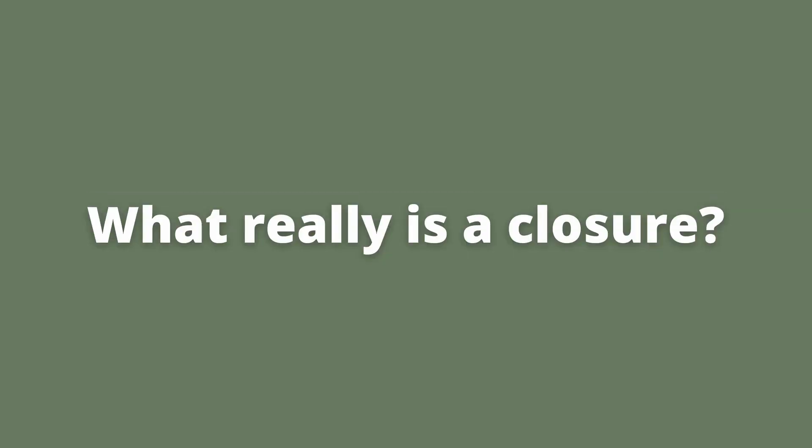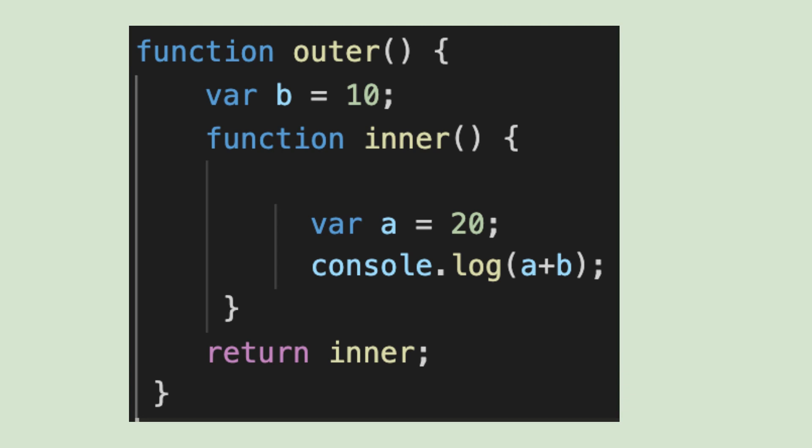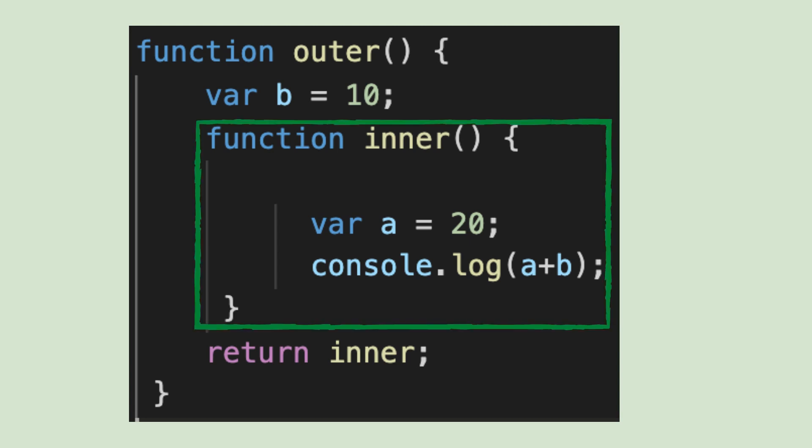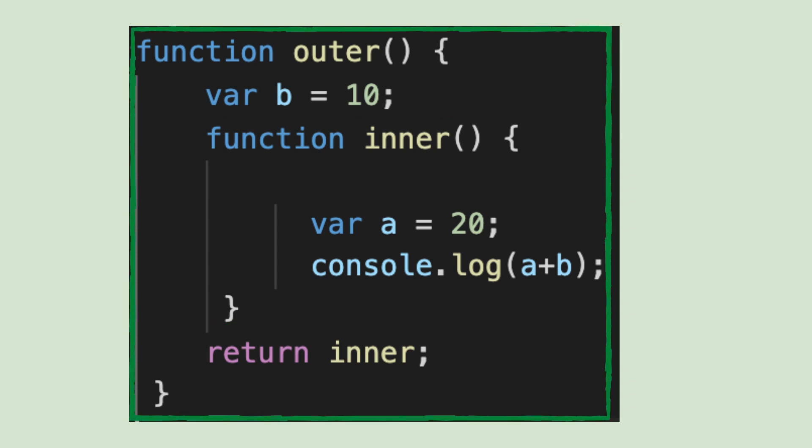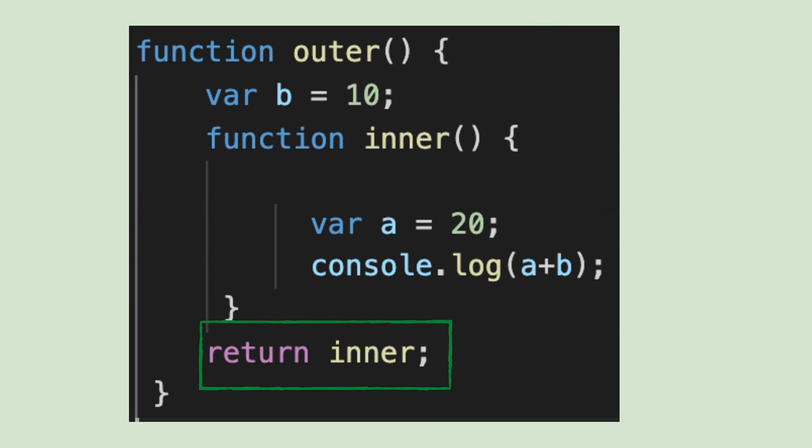This is quite similar to lexical scoping. So let's see what really is a closure. Take this for an example. Here you have an outer function and an inner function, and the inner function adds a and b. The outer function returns the inner function.